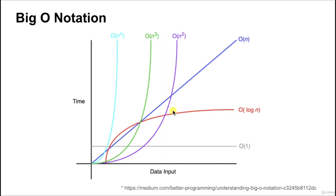For the other notations, the data input amount changes the amount of time needed. O(log N) describes a situation where as data input increases, the amount of time it takes becomes flatter. Then there's O(N), referred to as linear time — as data input increases, time increases in a linear pattern. And then there are cases where as data input increases, the time to process increases exponentially, as in O(N²), O(N³), and O(N^N). Let's look at actual codes to better understand this.